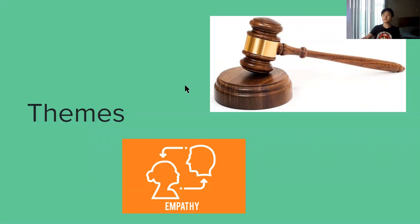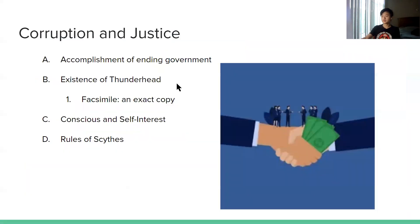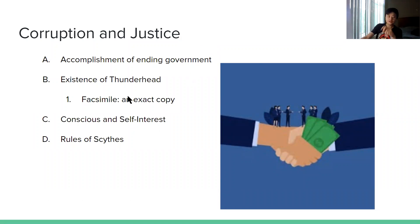Let's take a look at some recurring themes. First: corruption and justice. In the prequel of a chapter, Scythe Cary claims that arrogance, self-interest, and endless fighting will always be stuck to government as long as humans are involved. That leads to the question: will humans always be plagued with self-interest, and how do we conquer that?